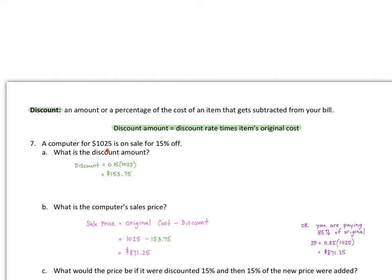The computer still costs $1,025 and is on sale for 15% off. The discount amount is 0.15 times $1,025, which gives us $153.75. The sale price is the original cost minus the discount: $1,025 minus $153.75 equals $871.25 — and that's without any sales tax. Alternatively, we're really just paying 85% of the original cost, so 0.85 times $1,025 gives the same result.